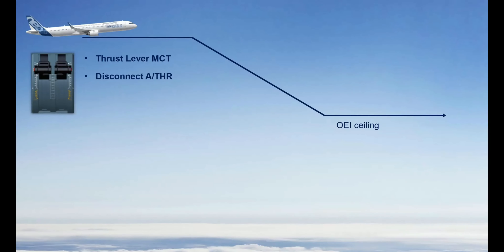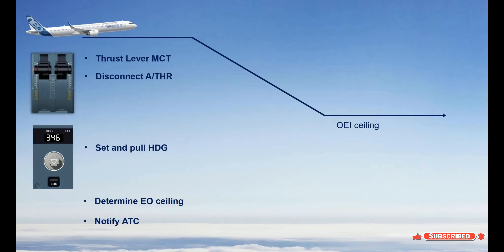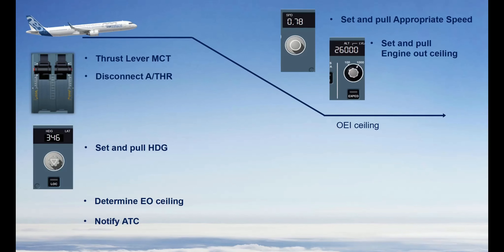Now let us take a look at the different steps to apply in the event of an engine failure in cruise. In this situation, you must apply the following actions: set all thrust levers to MCT; disconnect the autothrust to avoid any thrust reduction at the engagement of the descent mode; set and pull heading as appropriate to ensure a safe trajectory; determine the engine out ceiling that corresponds to the strategy considered; when appropriate, notify ATC; on the flight control unit, set and pull the appropriate speed; set and pull the engine out ceiling corresponding to the descent strategy.